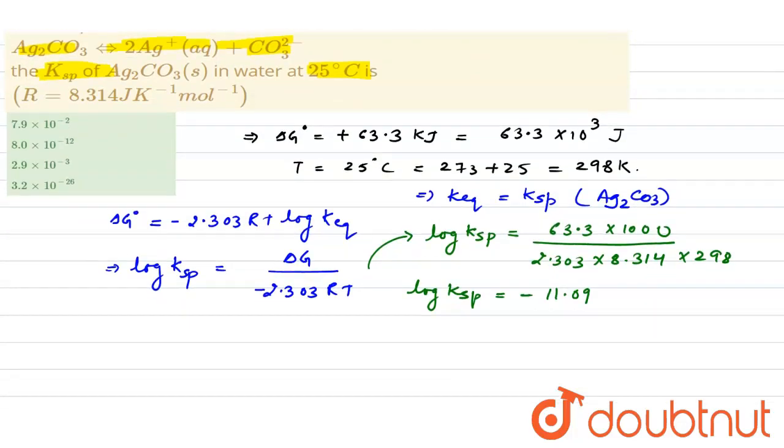We can write Ksp from here. It will be equal to 10^(-11.09), or I can write it as 10^(-12) × 10^(+0.91). Now, 10^(0.91) will give approximately equal to 8.